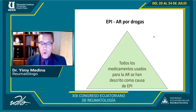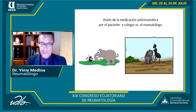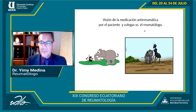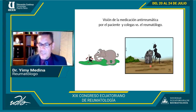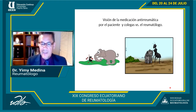Todos los medicamentos usados para la artritis reumatoide se han descrito como causa de EPI. Siempre muestro este dibujo: los reumatólogos vemos el medicamento como la hormiga y la enfermedad como el elefante, pero a veces los colegas y el paciente ven la hormiga más grande que el elefante, considerando el medicamento más dañino que la enfermedad. Es muy importante educar al paciente y dar a conocer la enfermedad a los colegas.